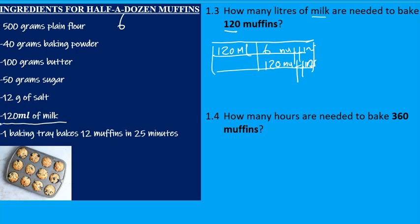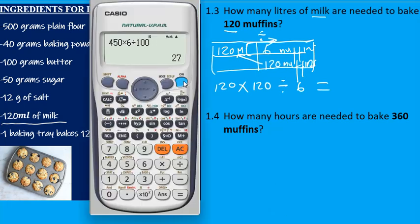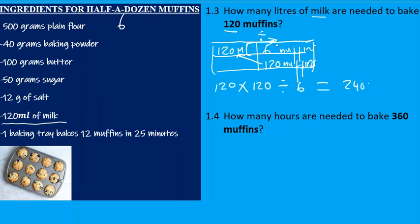How much milk would you need for 120 muffins? Put muffins under muffins. Crisscross method: 120 × 120 divided by 6 gives 2400 milliliters. The last step is to convert to liters — divide by 1000 — giving you 2.4 liters of milk.